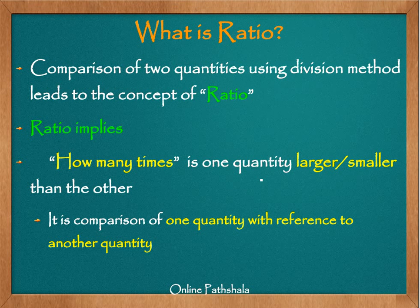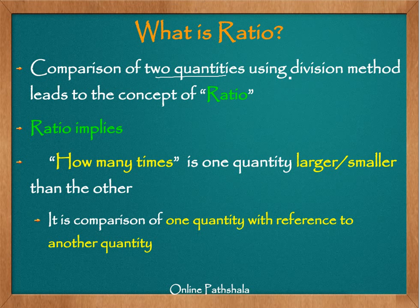In the previous video, we learned about two methods of comparing various quantities: the difference method and the division method. We concluded that when we go for the division method to compare two quantities, the resulting numbers are smaller. When we compare quantities using division, that leads to ratio. Ratio simply means comparison of quantities using the division method.